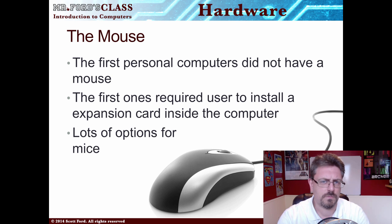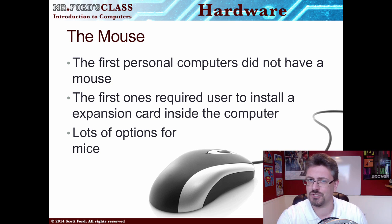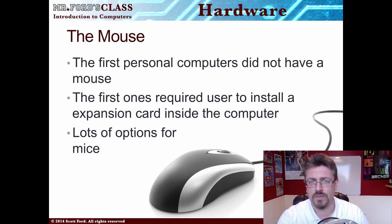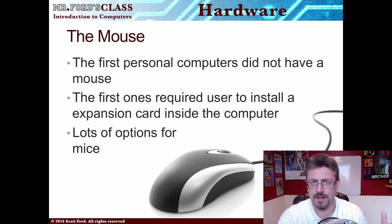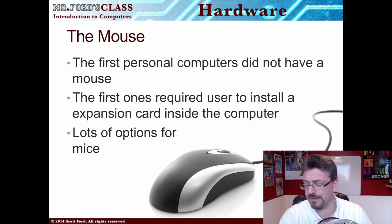The mouse: the very first PCs didn't have mice attached. I still remember my first computer — I had a 386, and if I wanted a mouse, I had to install a serial mouse by opening up the case and installing an expansion card. Nowadays we have Bluetooth mice, USB, and all sorts of options.